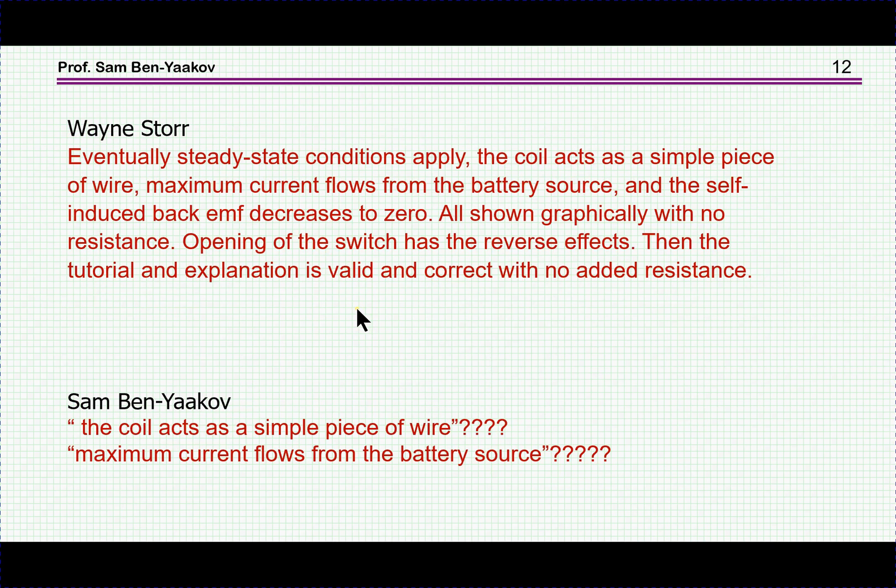And then it says: Eventually steady-state conditions apply. The coil acts as a simple piece of wire. Maximum current flows from the battery source and the self-induced back EMF decreases to zero, all shown graphically with no resistance. Opening the switch has the reverse effect. Then the tutorial and explanation is valid and correct with no added resistance.